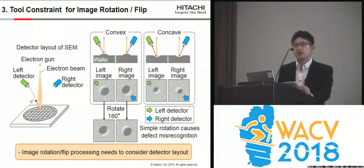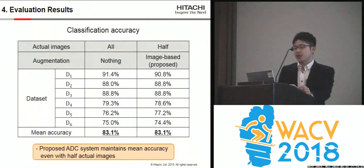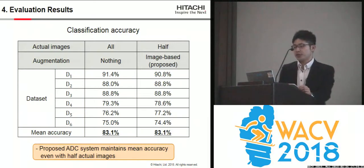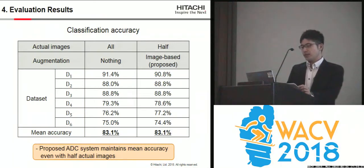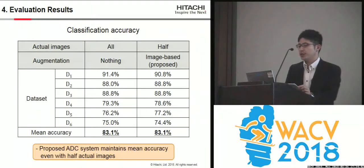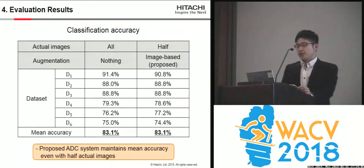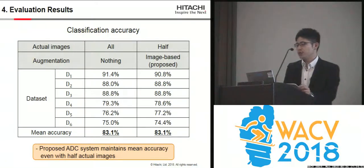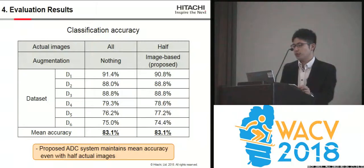Finally, I'll explain the evaluation results. This evaluation compared classification accuracy under two conditions: one uses all actual images for training. This table shows the proposed ADC system maintains the mean accuracy even with half the actual images for the training.